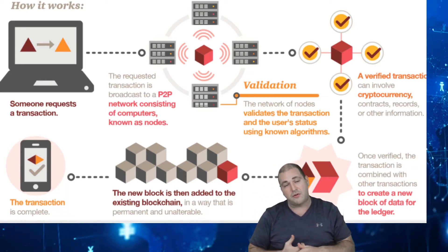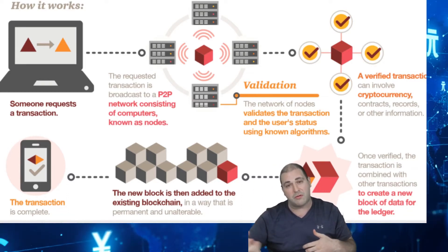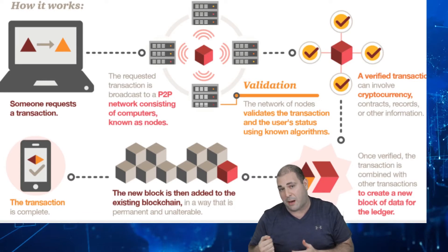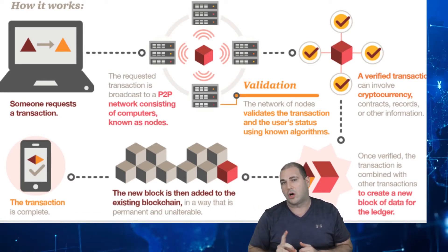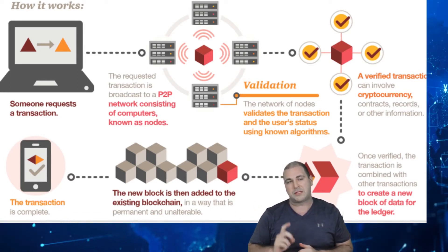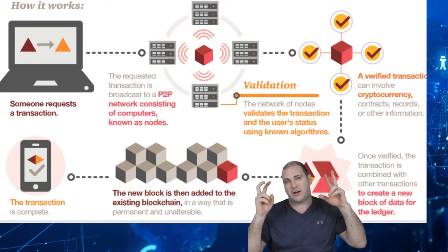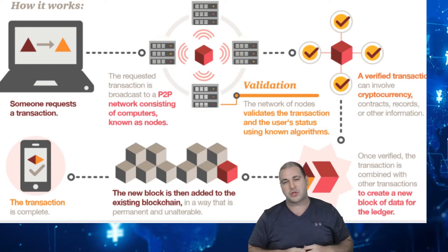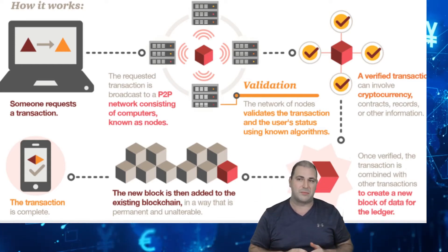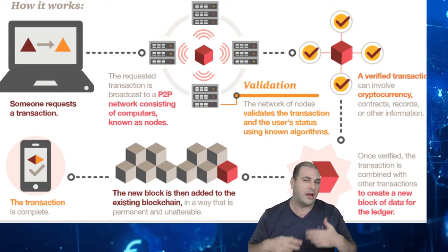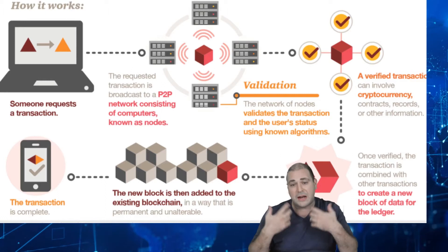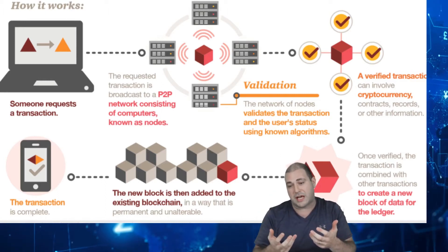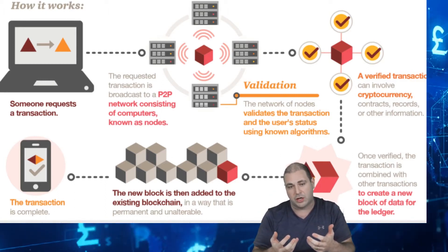And if you try to say later that no, that didn't happen, all those other computers will say no, that's wrong. So basically you cannot cook the books or cheat the system later. You can't go in and change it after. So how does a blockchain transaction actually work?